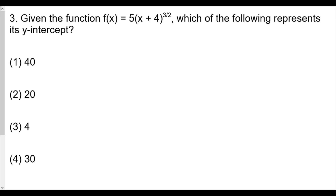We have question number 3. Given the function f(x) = 5 times (x + 4) to the 3/2 power, which of the following represents its y-intercept? We remember from previous lessons that the y-intercept is going to be the y-value when x is equal to 0. So we're going to find f(0), which is where we find the y-intercept.